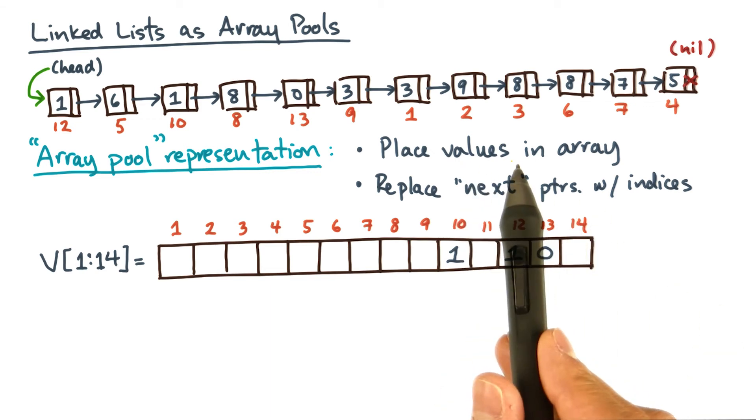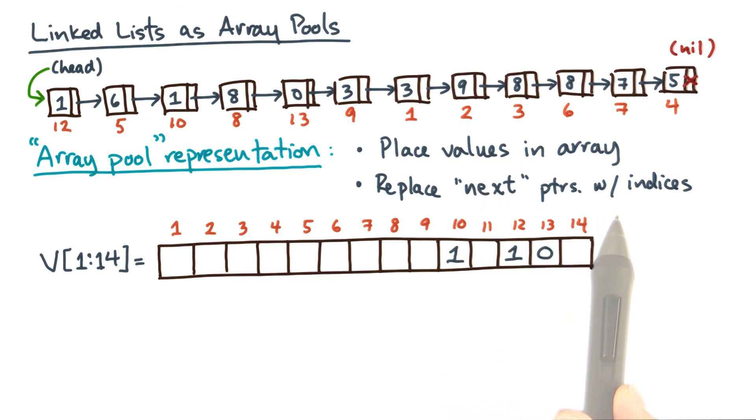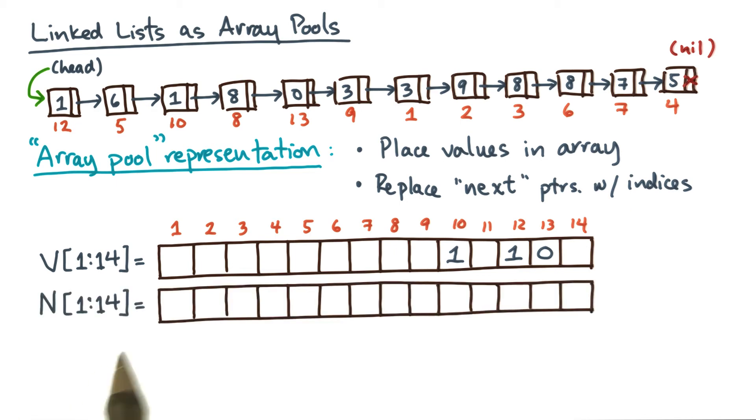So that's our story for values, but what about the next pointers? For that, let's allocate another array, call it capital N. Now, I've made the length the same between N and V, so that for every value, there's a corresponding next pointer.